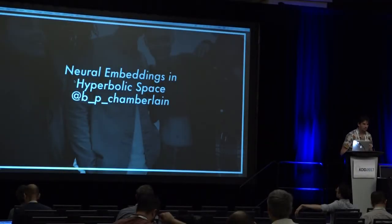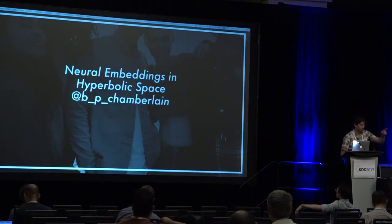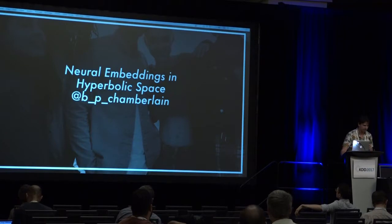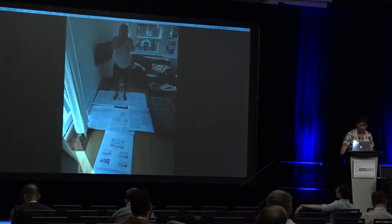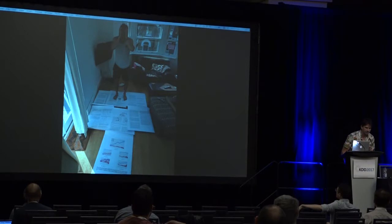My name is Ben Chamberlain. I'm at Imperial College London and also ASOS.com, which is a British e-commerce site. I'm going to be talking about neural embeddings in hyperbolic space. My poster is over there — thanks to everyone who came and had a look. It was actually my second go at making a poster. My first go, I sent my paper to the printer instead of my poster. There are a lot of good ways to spend £100 in London, but printing out your paper in A1 is not one of them.